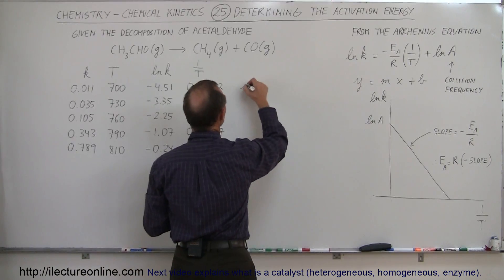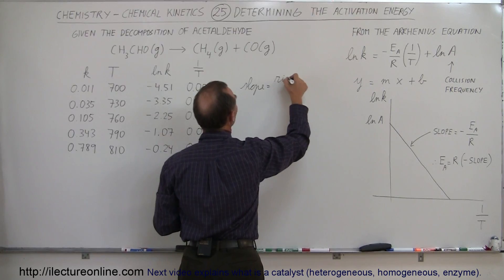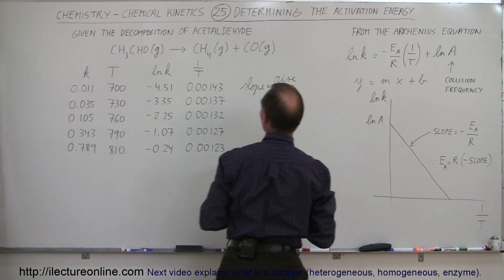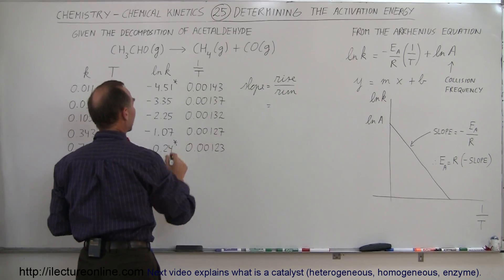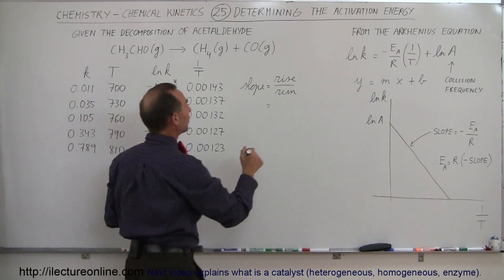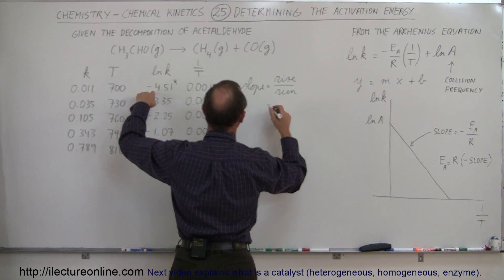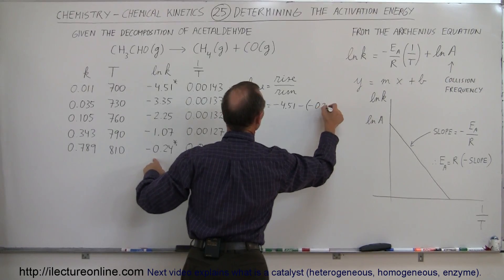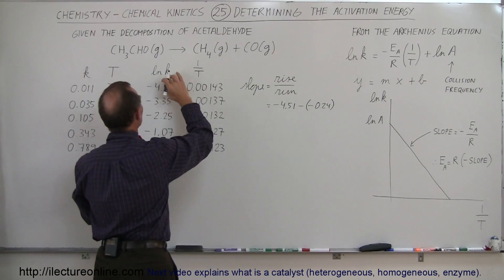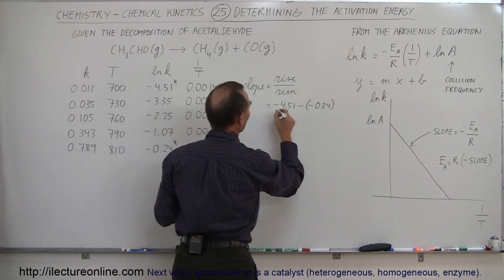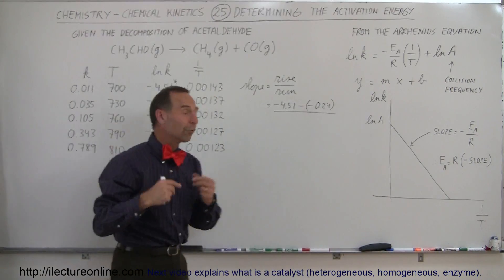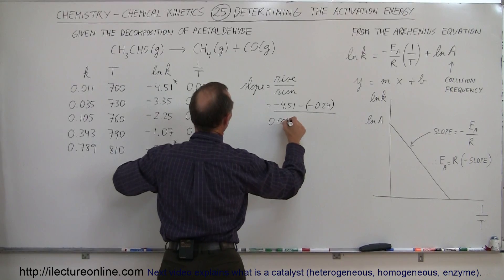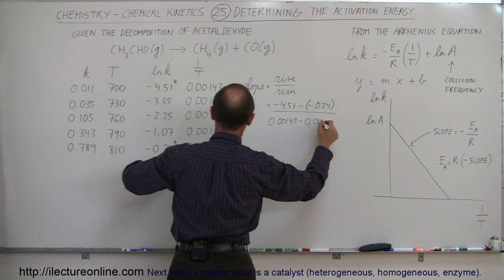The slope can be determined as the rise divided by the run. The rise would be the change in the vertical distance — that would be the change in the natural log of k. So let's take this value and this value and take the difference of the two. That would be the initial value minus the final value — so it would be −4.51 minus −0.24. We divide that by the run, which is the horizontal distance — the difference in 1 over the temperature — so it would be 0.00143 minus 0.00123.